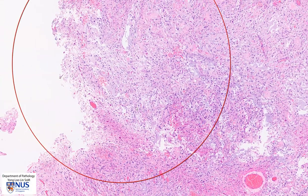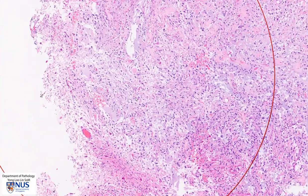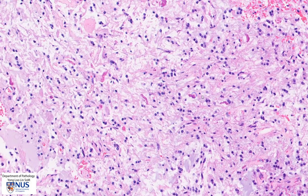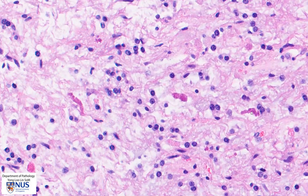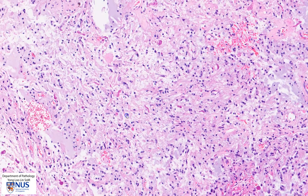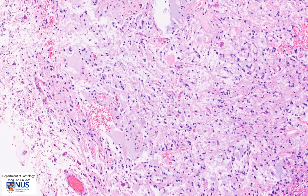In this region, we see another structure that is quite frequently seen in pilocytic astrocytomas. These are very brightly eosinophilic, elongated, beaded, or sometimes corkscrew-shaped structures, known as Rosenthal fibers. Rosenthal fibers contain glial fibrillary acidic protein, GFAP, which is a protein found in the intermediate filaments of glial cells. They can be seen in benign conditions as well as some tumors, including pilocytic astrocytoma — so they are not specific for pilocytic astrocytoma, but they are often seen in this tumor.